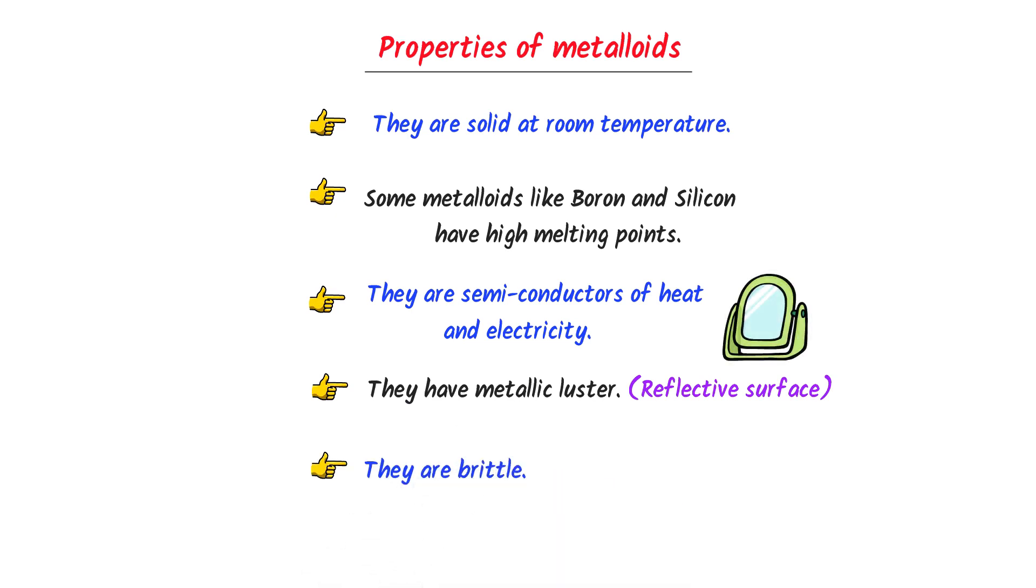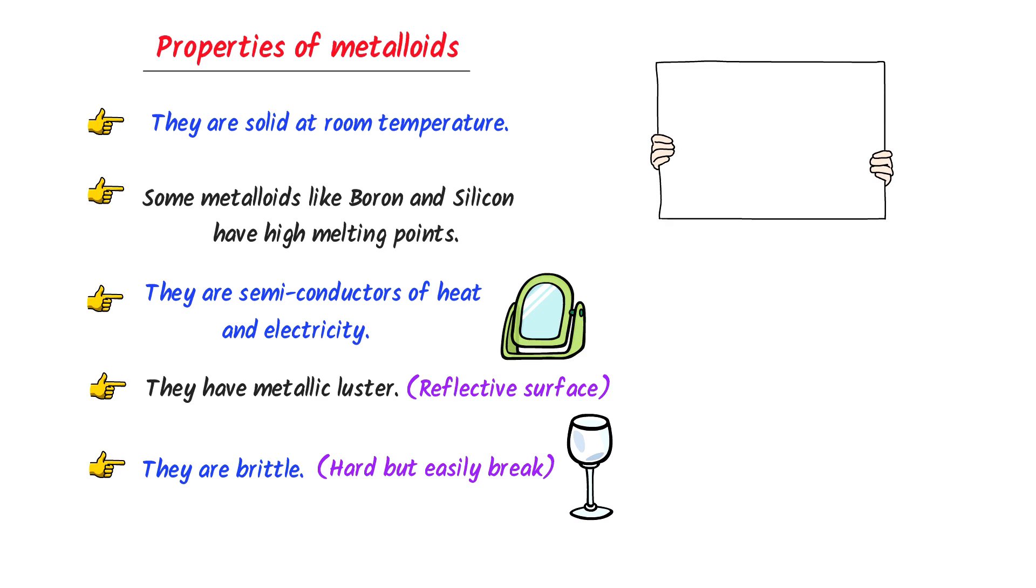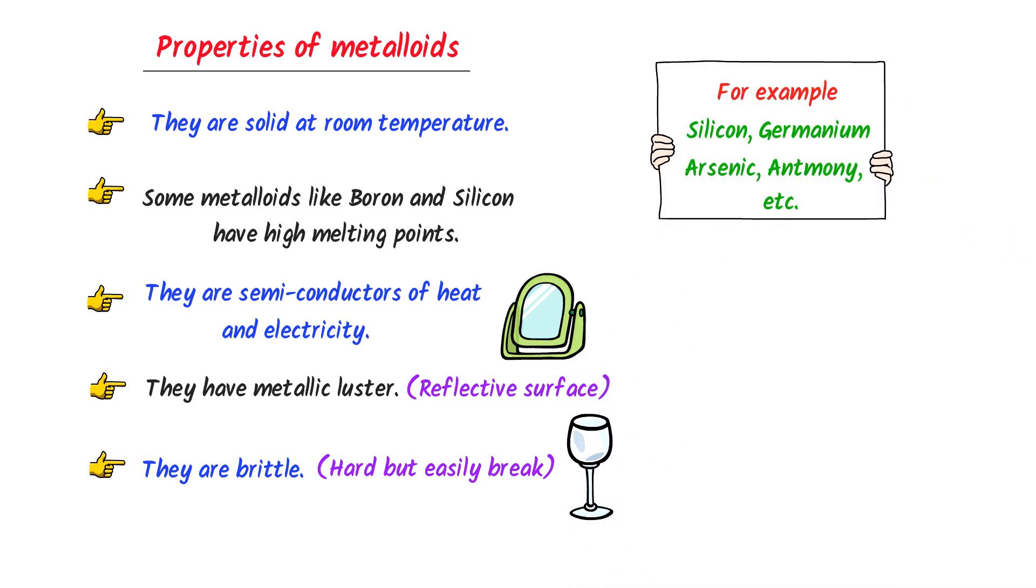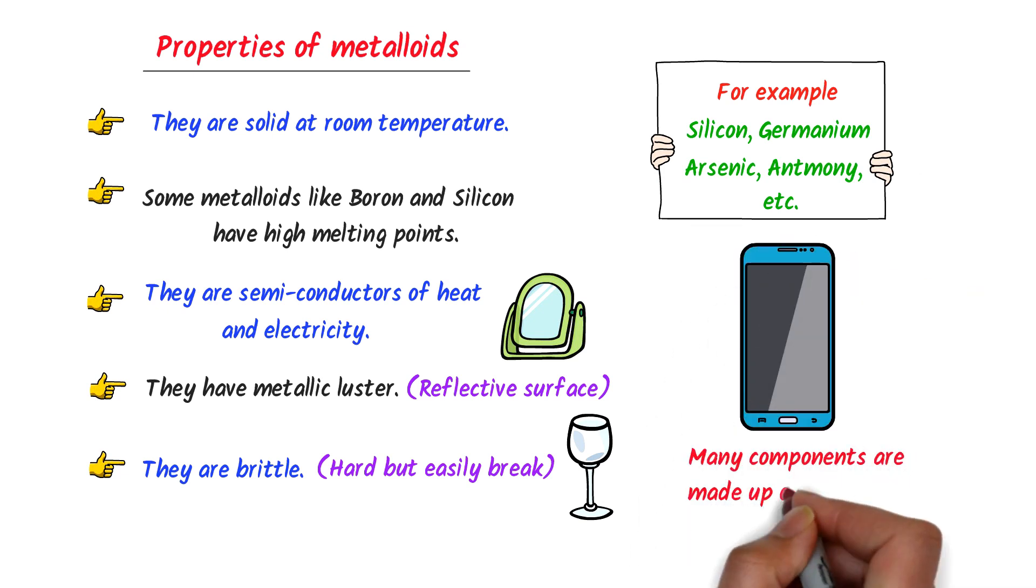Fifthly, they are brittle. It means that when we apply force to it, they are easily shattered. For example, silicon, germanium, arsenic, etc. are all metalloids. In our daily life, many components of cell phone are made up of metalloids.